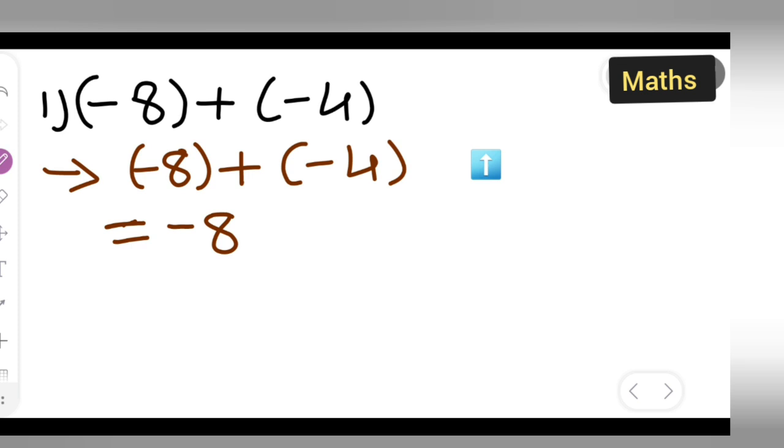Now plus into minus is nothing but minus itself, so you can write -4. Now basically you are going to add these numbers -8 and -4.